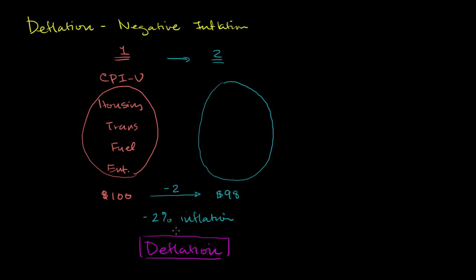Now deflation is not the norm, especially for growing economies, the way that our current economic systems run. Although it does happen, Japan in particular is probably the most recent, most famous case of deflation.